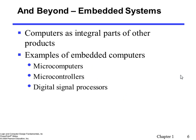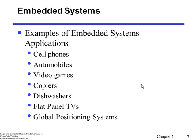Embedded systems are systems where computers are an integral part of the larger system. Examples of embedded computers include microcomputers, microcontrollers, and digital signal processors. Examples of embedded systems include cell phones, automobiles, video games, copiers, and dishwashers. Almost all electronic gadgets and electrical systems in our daily life are some sort of computer system — sometimes very low performance, sometimes very high performance — and they are called embedded systems.